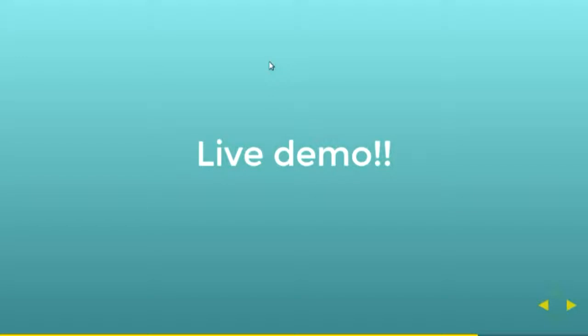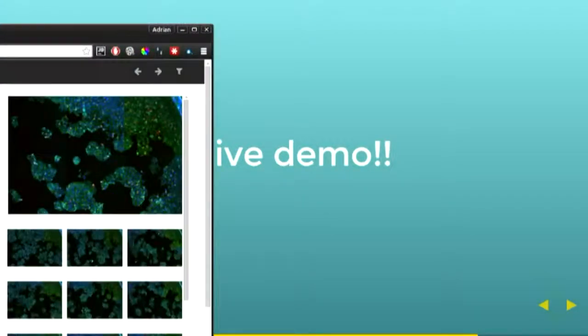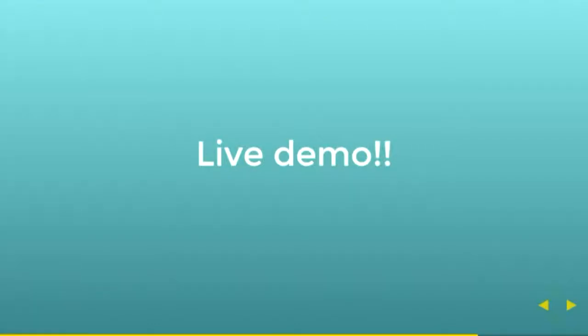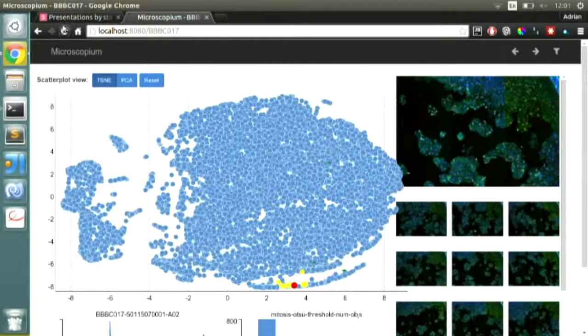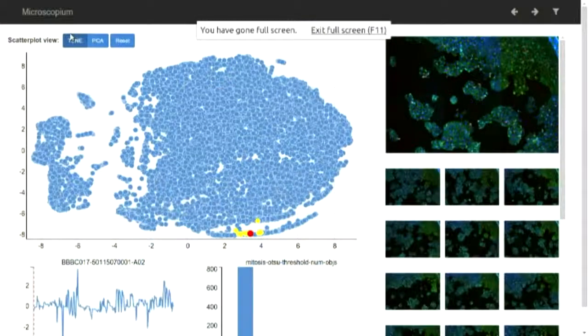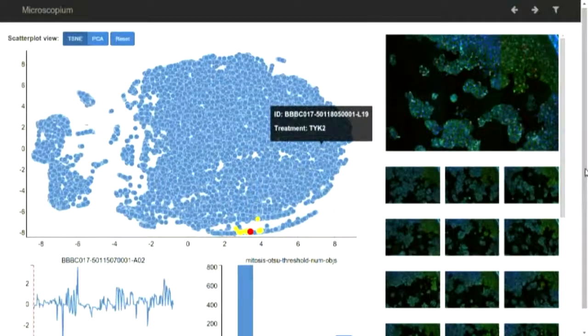I'll just provide a live demo of Microscopium in action. This should give you a better idea of what I mean. Cool, the data set that we're looking at here is a screen that was done a few years ago on a collection of HT29 colon cancer cells where 1,000 different genes were treated using short hairpin RNA.